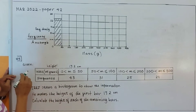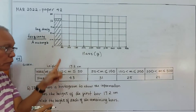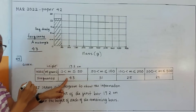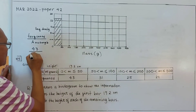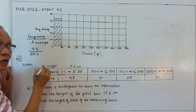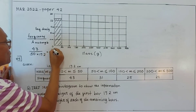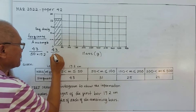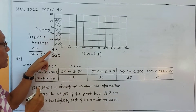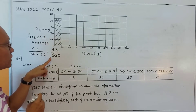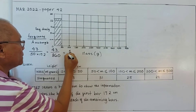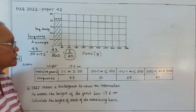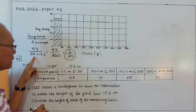We will use ratio and proportion. The frequency of the first bar is 43, and the area of the rectangle is 50 times 17.2, which is 860. So we have 43 over 860, which simplifies to 1 over 20. We will use this ratio of 1 over 20 — frequency over area — to find the height of the remaining bars.